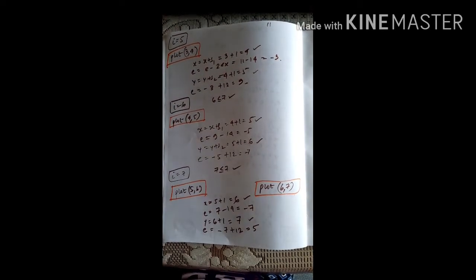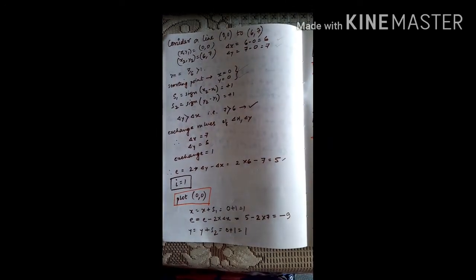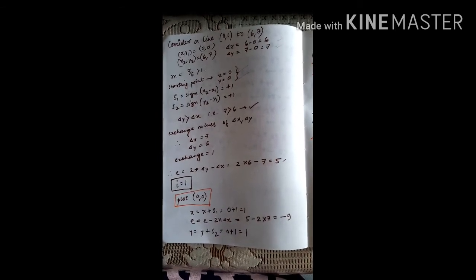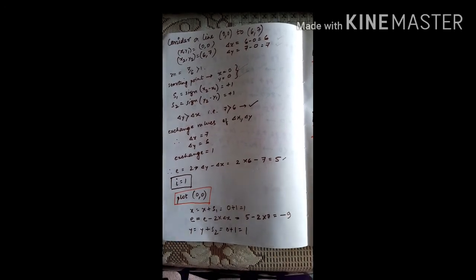From (0,0) to (6,7) these are the points plotted using the generalized Bresenham's line drawing algorithm. By the end of this class we have studied three line drawing algorithms: DDA line drawing algorithm, Bresenham's line drawing algorithm for m less than 1, and the generalized Bresenham's line drawing algorithm for m greater than or equal to 1. With this the line drawing algorithms end, and in the next class onwards we will be studying circle drawing algorithms. Thank you.